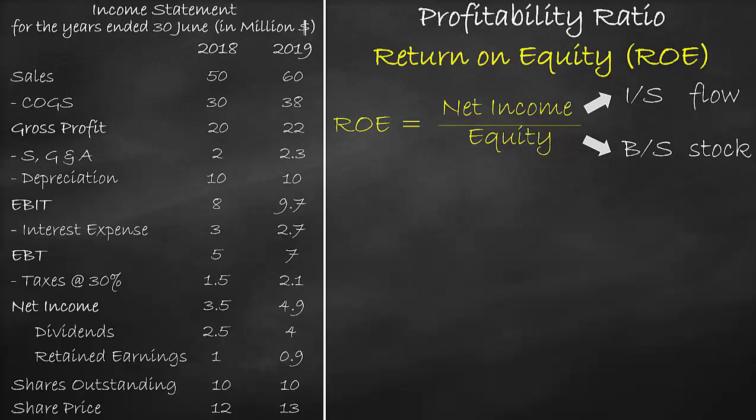So we will use one income statement and two balance sheets. In summary, any time you find a financial ratio that includes an item from the income statement and an item from the balance sheet, you will use the income statement item and get the average of the two balance sheet items.